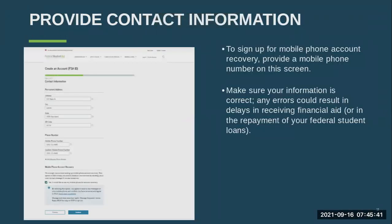The next step is going to be to provide your contact information. This will be where you put your mobile phone number for recovery — you already put your email in the last step. This step will include putting your actual physical home address and then putting your phone number for account recovery. Make sure the information is correct, as any errors can result in delays receiving your actual financial aid.